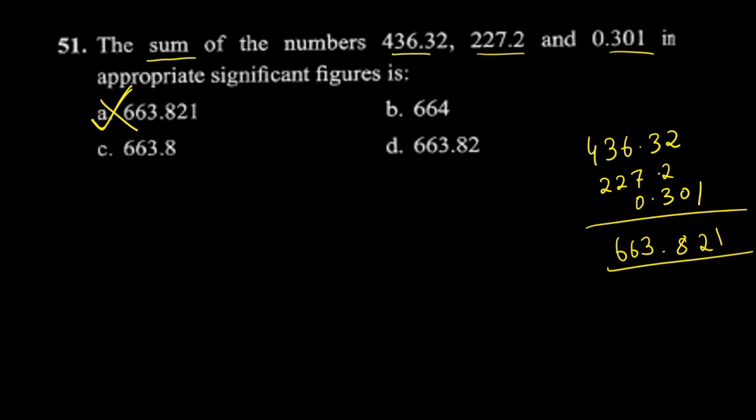For addition, we need to look at decimal places. How many decimal places does each number have? Two decimal places, one decimal place, three decimal places. That's correct: 2 decimal places, 1 decimal place, 3 decimal places.